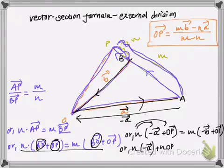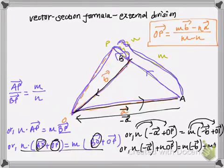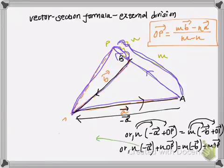Is equal to, once again I'm going to distribute m, so I have m negative vector B plus m OP. From this step what I'm going to do is...